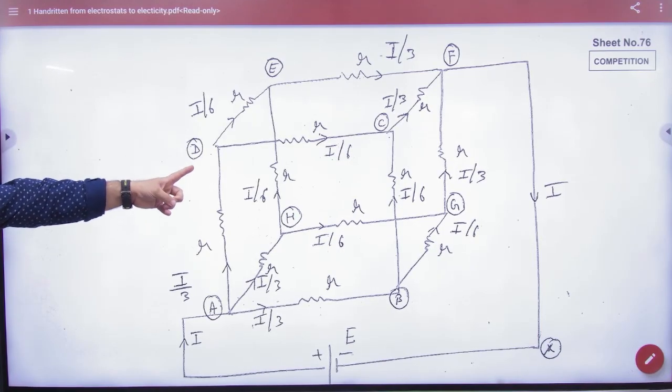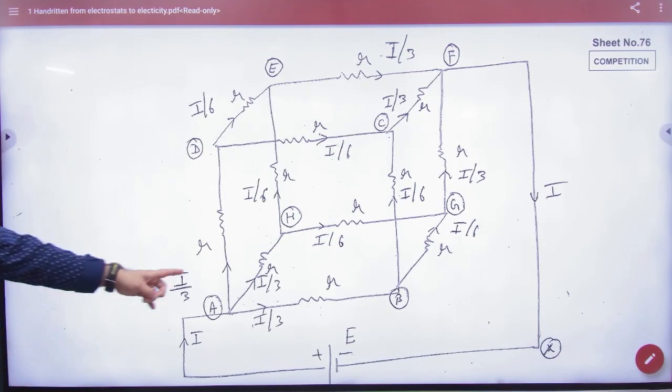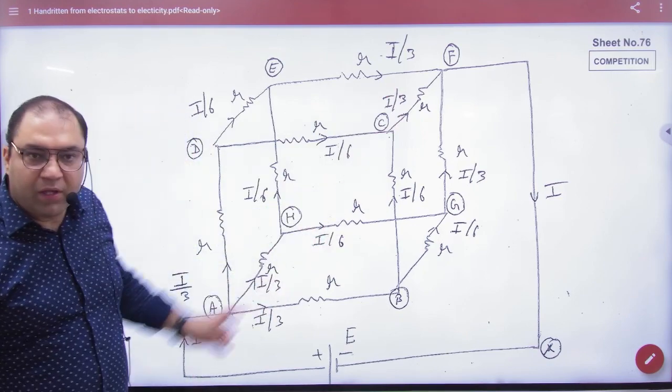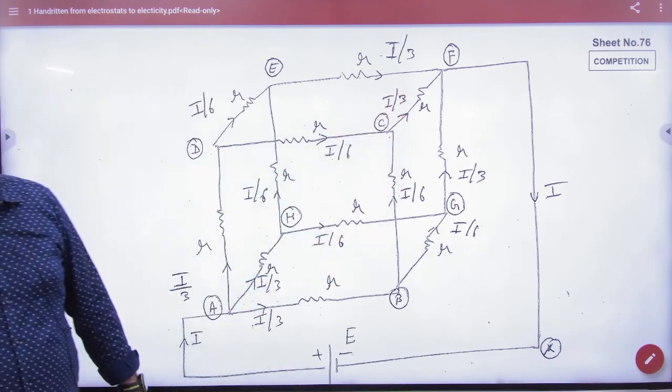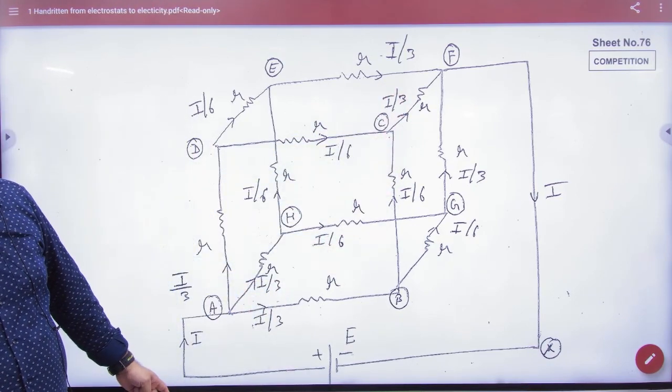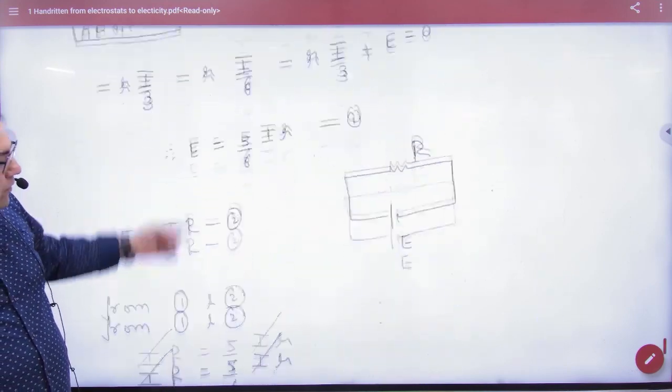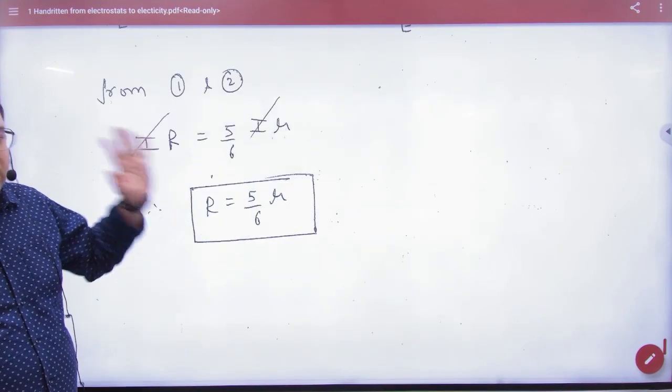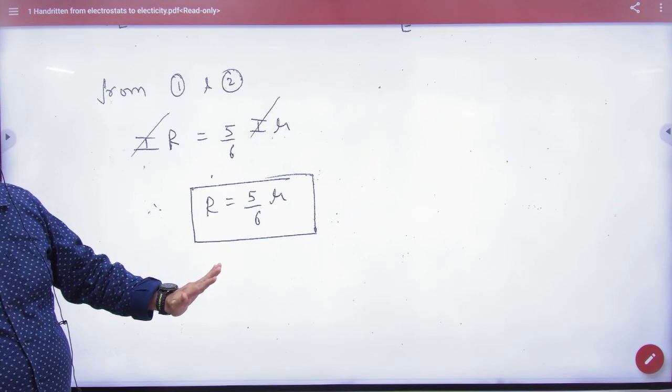If you make this diagram and you have to find the equivalent resistance between a and f, between a and f diagonal, every resistance is small r, then in that case what will be the answer? 5 by 6 r. Okay?